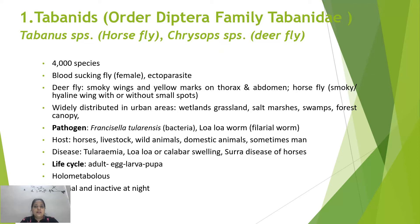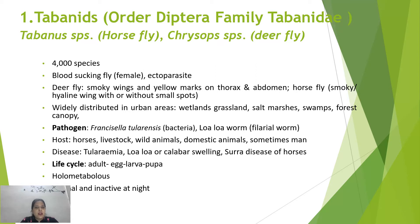Tabanids are widely distributed in wetlands, grasslands, salt marshes, swamps, and forest canopy. They transfer the pathogen Francisella tularensis and the Loa loa worm in host organisms like horses, livestock, wild animals, domestic animals, and sometimes humans. They cause tularemia and loiasis, also known as Loa loa infection.